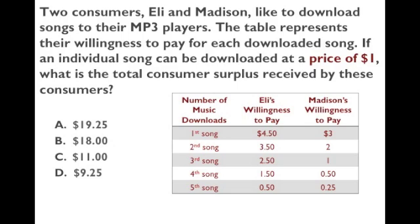Madison, on the other hand, will buy the first song because she's willing to pay $3 and the cost is $1. She'll buy the second because she's willing to pay $2 and the cost is $1. She also buys the third song, although she doesn't make any surplus on that.